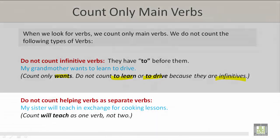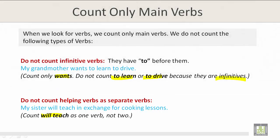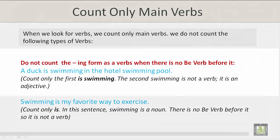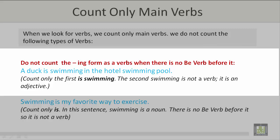Do not count helping verbs as separate verbs. For example: 'My sister will teach in exchange for cooking lessons.' Count 'will teach' as one verb, not two. Do not count the -ing form as a verb when there is no 'be' verb before it. For example: 'A duck is swimming in the hotel swimming pool.' Count only the first 'is swimming.' The second 'swimming' is not a verb — it is an adjective.